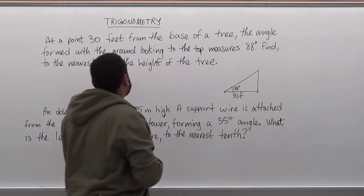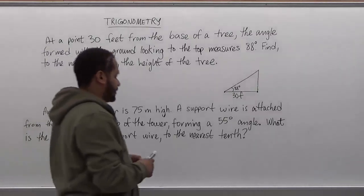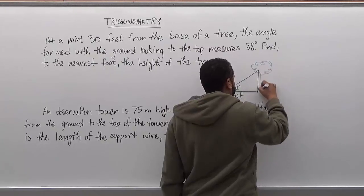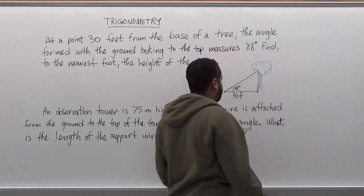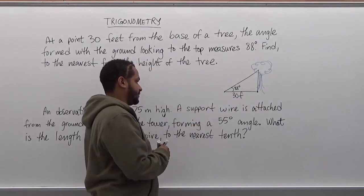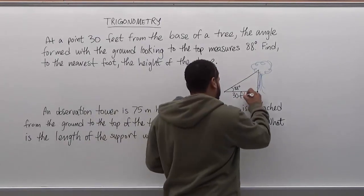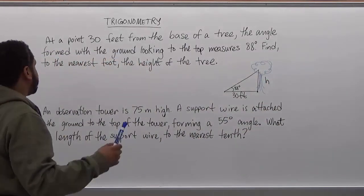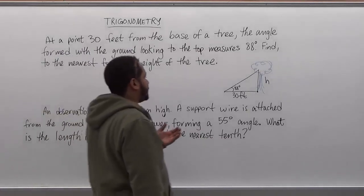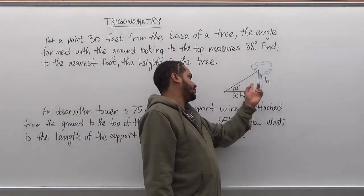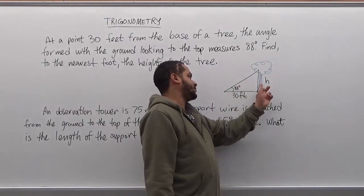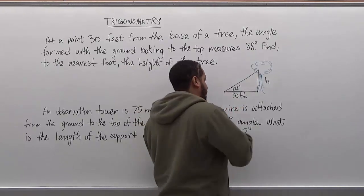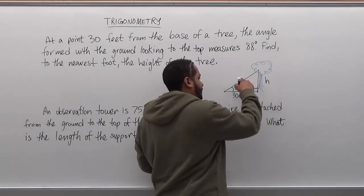From this information we're to find, to the nearest foot, the height of the tree. We can envision this as a tree with its base and trunk. The distance from the base to the observation point is 30 feet. The height of the tree we'll call h. The side opposite to the angle is h, the adjacent side of the angle is 30 feet, and there's a right angle here making the third side the hypotenuse.